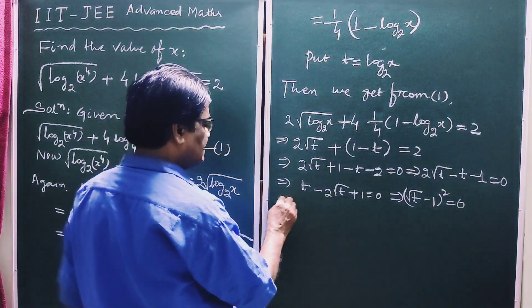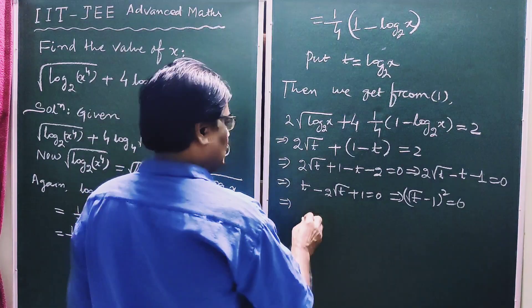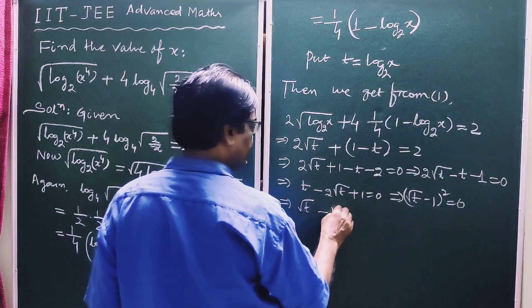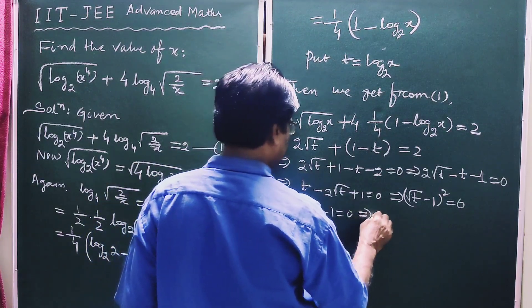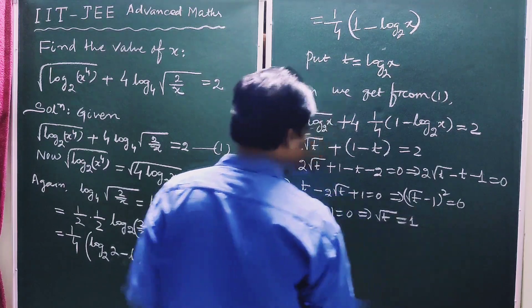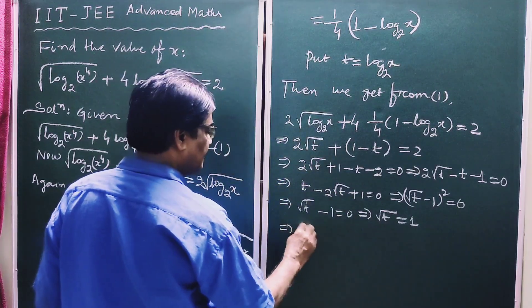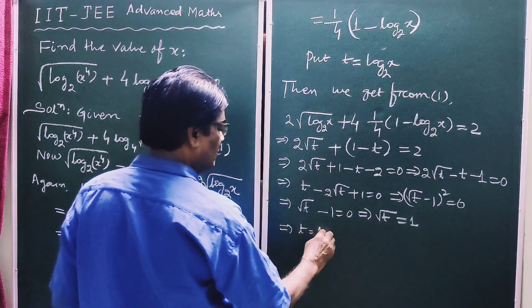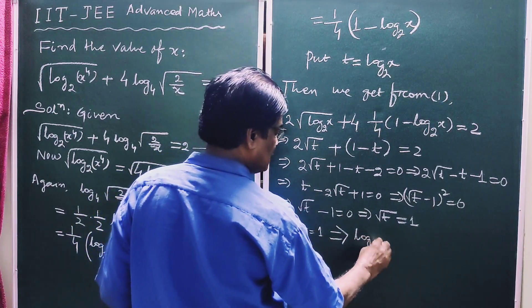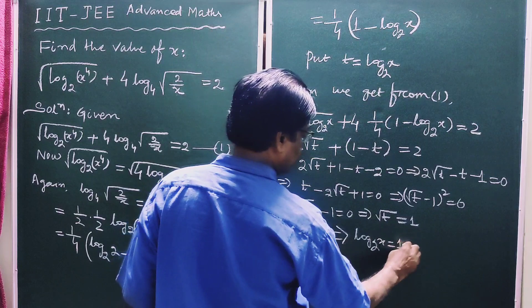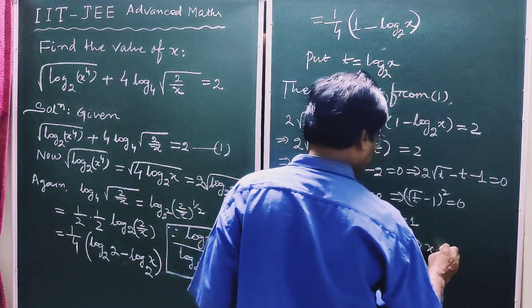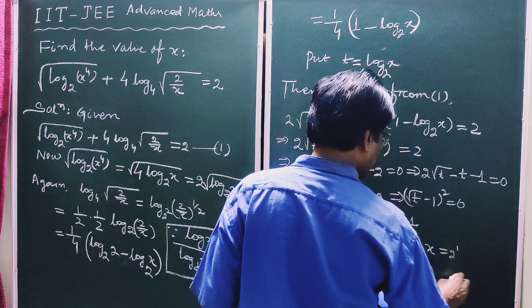This implies root t minus 1 equals 0, so t equals 1. Therefore log base 2 of x equals 1, which implies x equals 2.